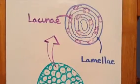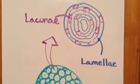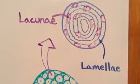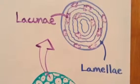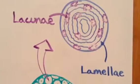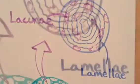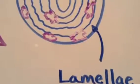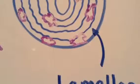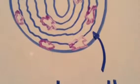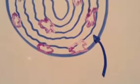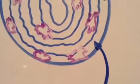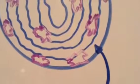When you zoom in closer to a single osteon, you notice that there are two major features: the lacunae and the lamellae. The lamellae are the concentric layers that make up an osteon. They're similar to tree rings when you examine the cross section of a tree stump.